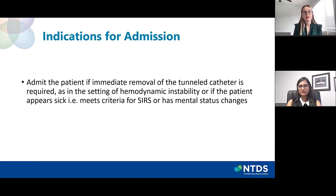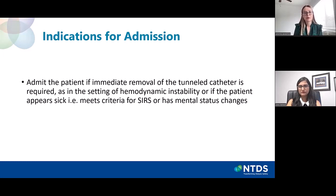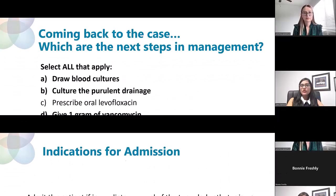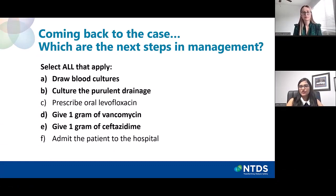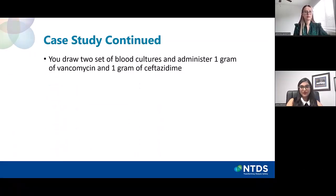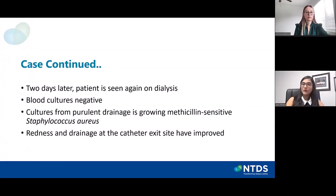The patient would need to be admitted to the hospital if there were indications for immediate removal of the catheter, such as evidence of hemodynamic instability, if the patient met criteria for sepsis or severe inflammatory response syndrome — in other words, if the patient was appearing sick. So to recap: draw two sets of blood cultures, culture the purulent drainage, and give one gram of vancomycin and one gram of ceftazidime. Then see the patient in follow-up two days later in the dialysis unit.